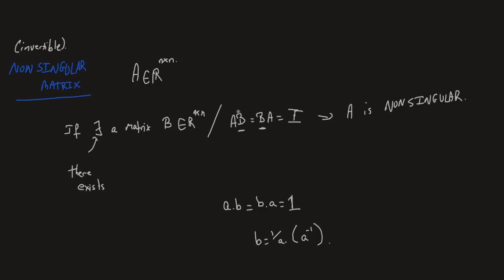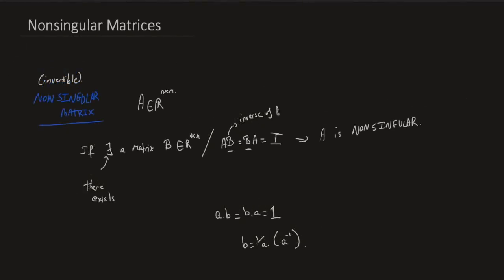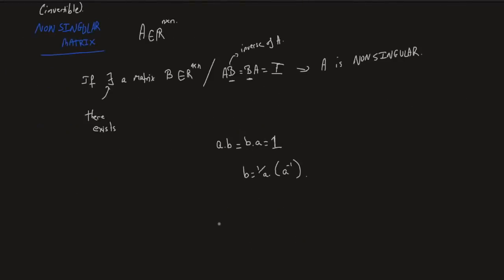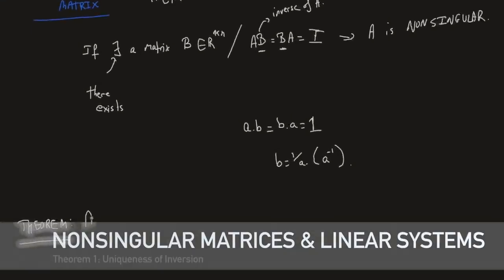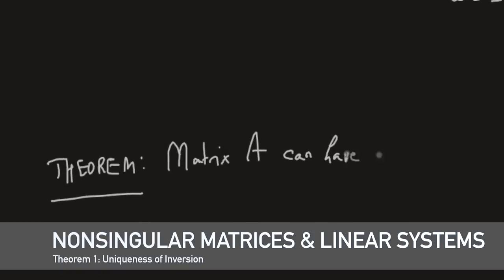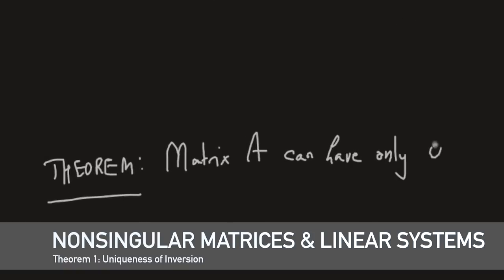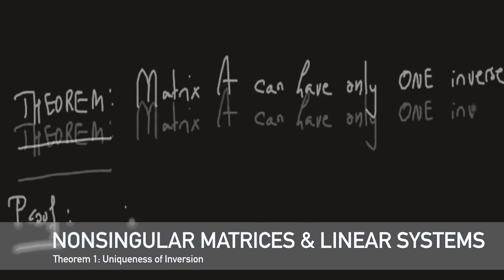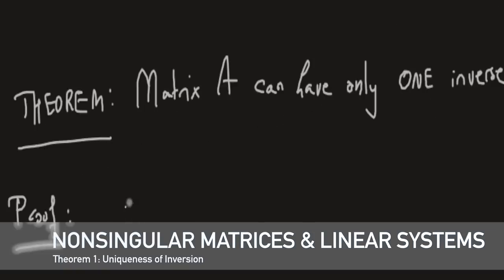So we will be using the term inverse. B is the inverse of A, if it exists. Let's mention a very important theorem: a matrix A can have only one inverse. So how do we prove that?